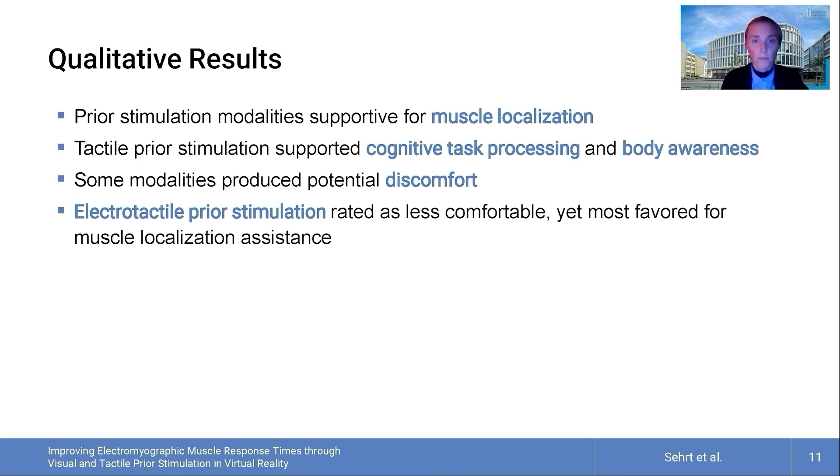The qualitative results revealed that all prior stimulation modalities were supportive for muscle localization. Tactile prior stimulation modalities were rated particularly supportive for task processing and body awareness. Importantly, some prior stimulation modalities caused potential discomfort and while the electrotactile prior stimulation modality was rated as less comfortable, it was yet mostly favored for muscle localization assistance.